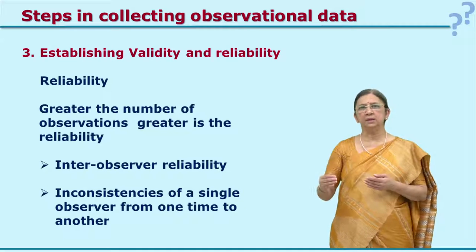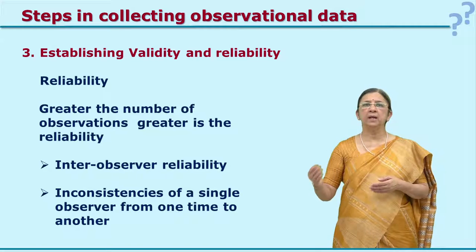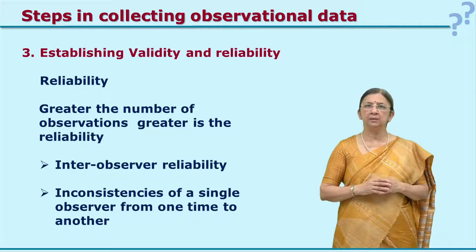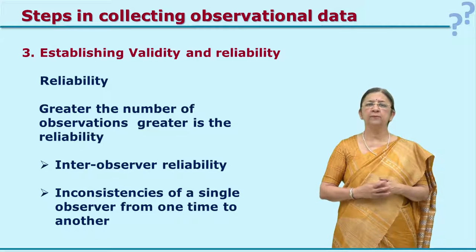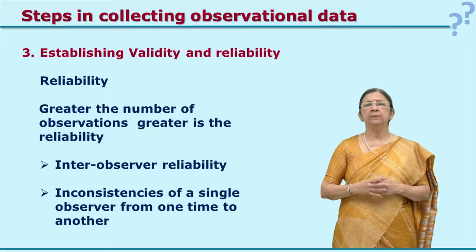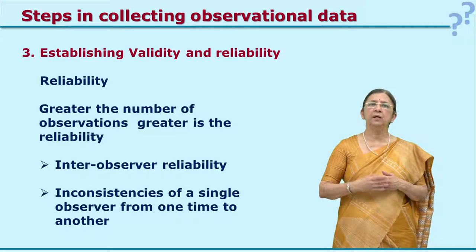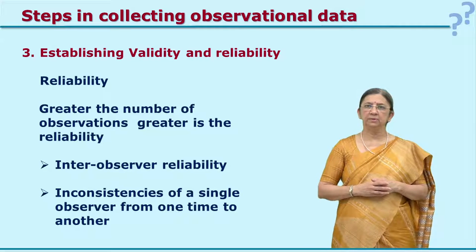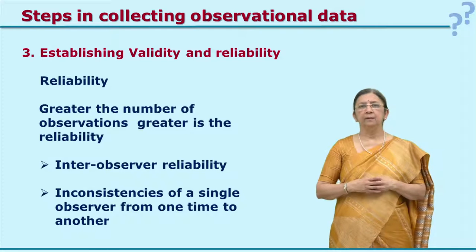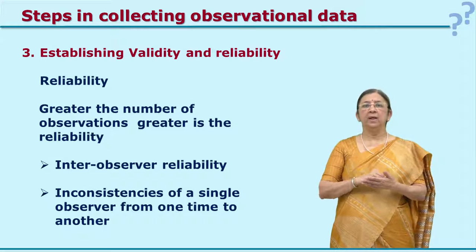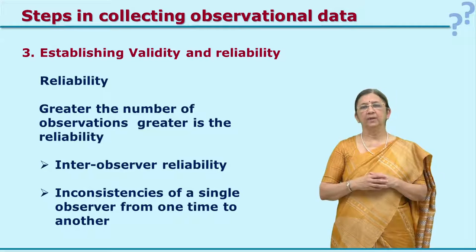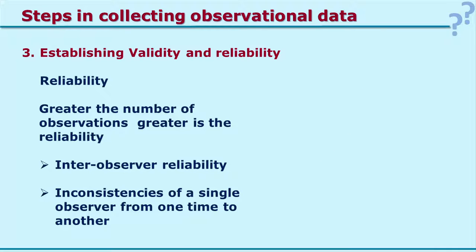One step is to establish validity—it should test what it is supposed to test. Validity can be increased by combining the observation schedule with other tools to cross-validate the data. For reliability, the tool should give the same results when used again or by somebody else—this is called inter-observer reliability. If two people use the same observation schedule, they should come out with similar results. The coefficient of correlation between two observations should be quite high—more than 0.8.